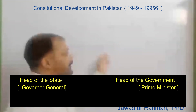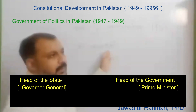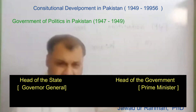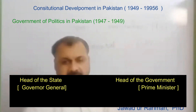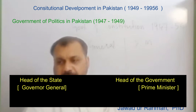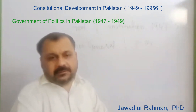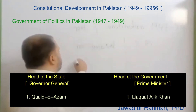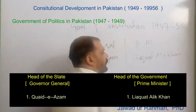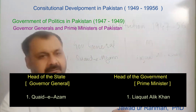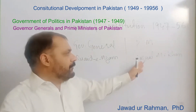There were two types of rulers: the head of state and the head of government. The head of state held the title of Governor General — essentially like a president. Quaid-e-Azam was the first Governor General, and Liaquat Ali Khan was the first Prime Minister. The constitution was parliamentary in nature, which is why Liaquat Ali Khan headed the government.